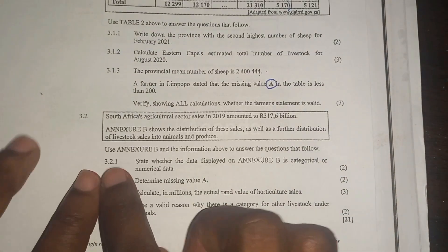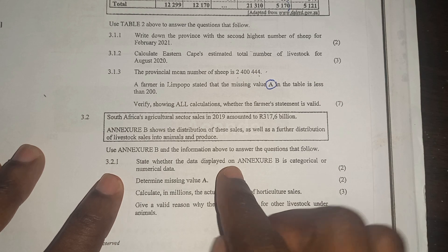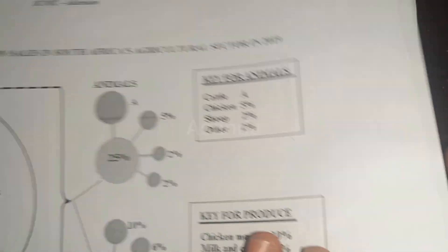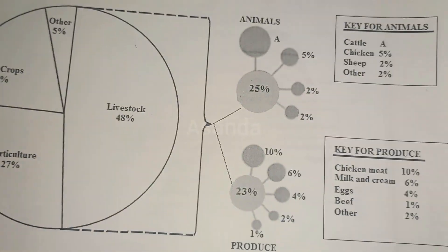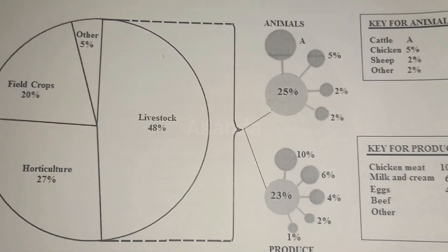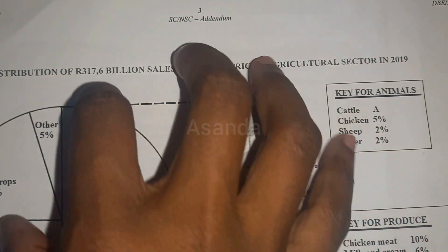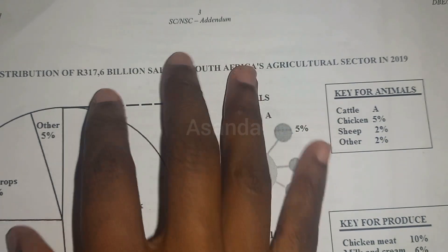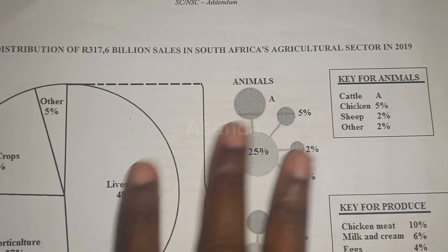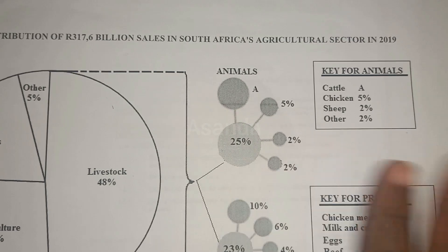Question one asks whether the data displayed in the annexure is categorical or numerical. This data is numerical — these are prices, the percentage of money made, the money that was counted.